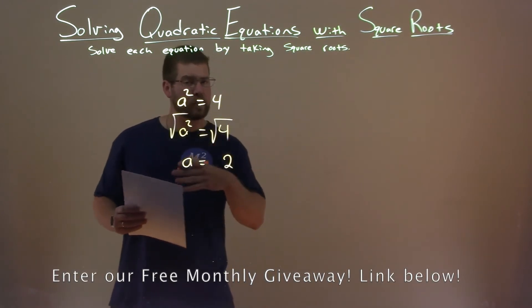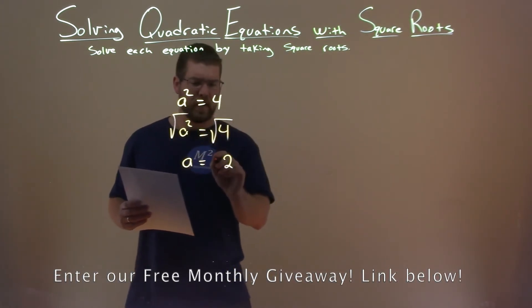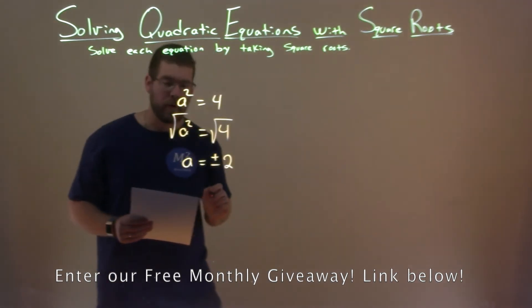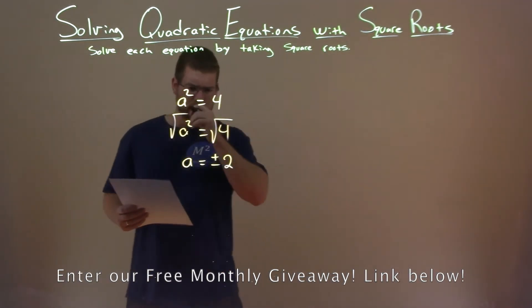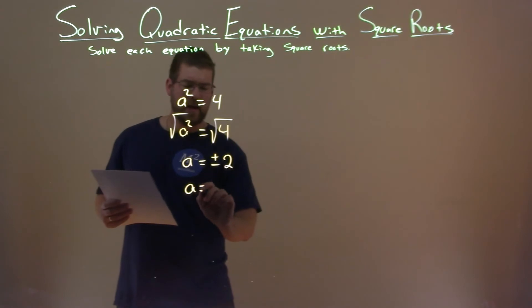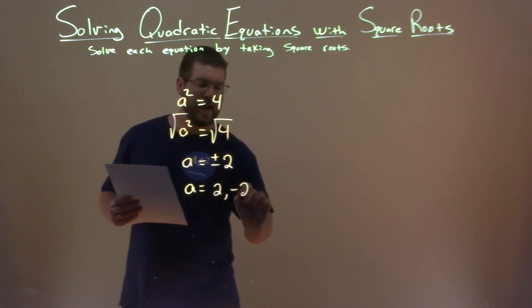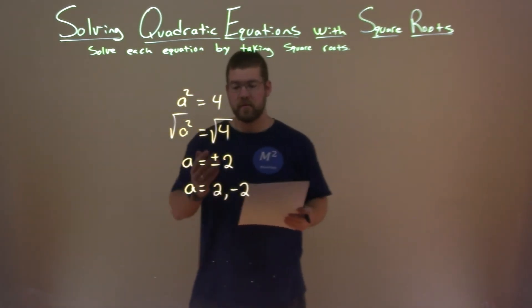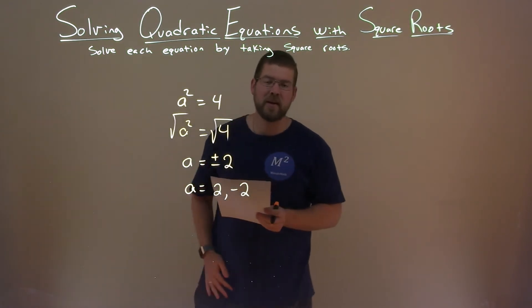But when we take the square root over an equal sign here, or take the square root of both sides, we have to write that as plus or minus. So that plus or minus is really saying a is equal to a positive 2 and a negative 2, and those are our two options that work for a and our final answer.